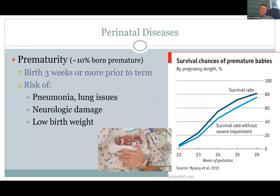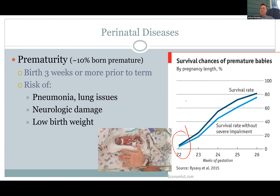Premature babies — preemies. Today we have great neonatal units and things we can do, but you can't be born too premature. The survival chance: the closer you get to term, the greater the survival rate. If you're born at 22 weeks, there's a 0 to 1% chance of survival. You want to try to carry the baby to term, definitely. About 10% are premature — maybe some of you were preemies.